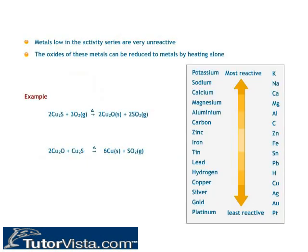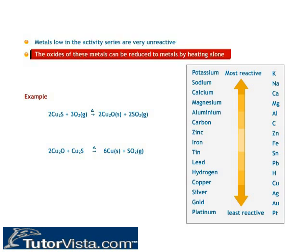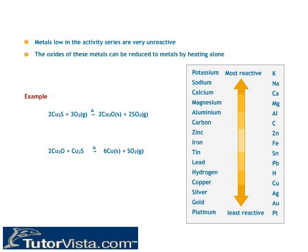Extracting metals low in the activity series: Metals low in the activity series are very unreactive. The oxides of these metals can be reduced to metals by heating alone. For example, copper, which is found as Cu2S in nature, can be obtained from its ore by just heating in air.